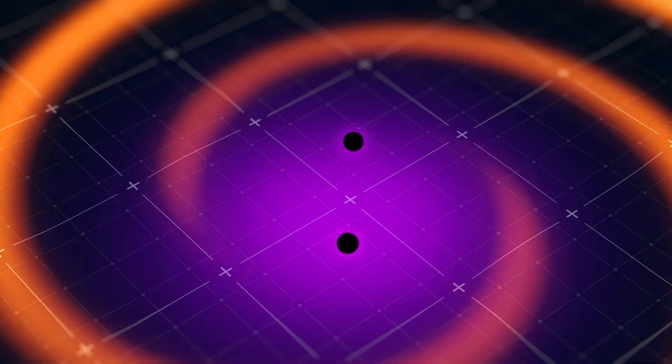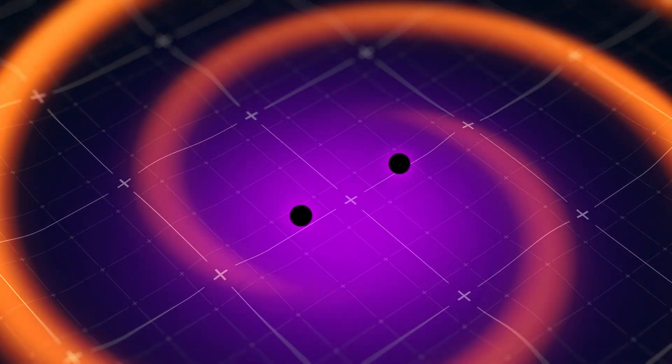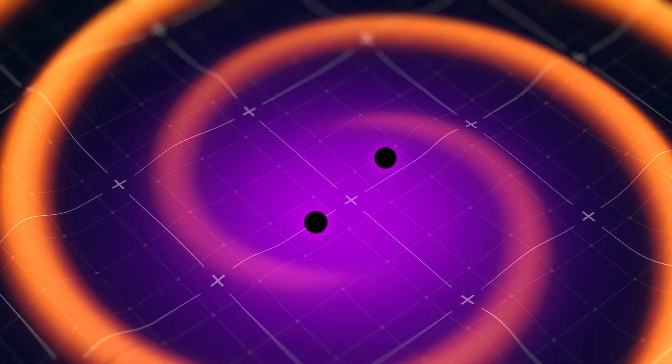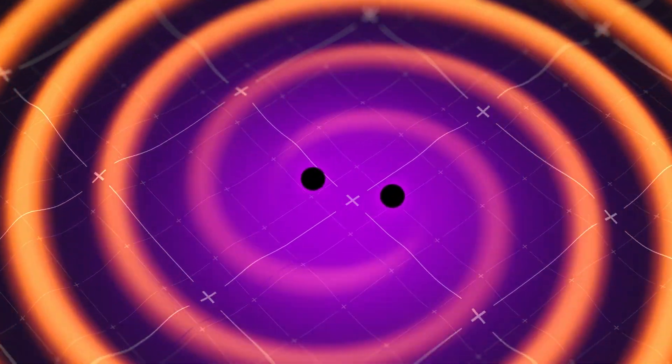Their study concentrates on systems in the universe called extreme mass ratio inspirals. These systems are made up of two black holes orbiting each other — one very big black hole and one tiny one. The tiny one comes orbiting around the big black hole and falls down toward it, where they form a system held together in a cosmic dance, continuously orbiting each other.